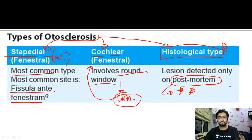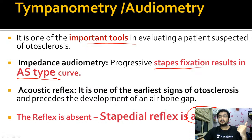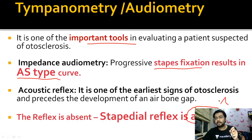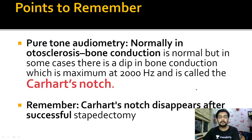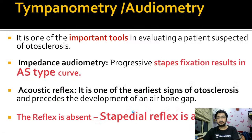The acoustic reflex will be absent because stapedial reflex is caused by contraction of the stapedius muscle and movement of the stapes. Since the stapes is fixed, you will not be able to elicit the stapedial reflex. In the tympanogram we normally get a spike, but this spike will be absent as the stapedius is fixed. A characteristic finding you would see on pure tone audiometry is a notch or dip at 2000 Hz in the bone conduction curve - called Carhart notch.